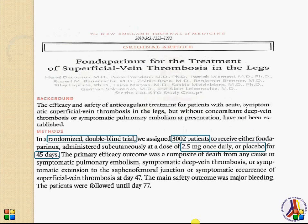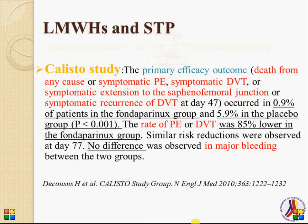The CALISTO study, published in the New England Journal of Medicine in 2010, randomised 3,000 patients. One group received fondaparinux 2.5 mg daily and the other received placebo for 45 days. The primary efficacy outcome — including death from any cause, symptomatic PE, symptomatic DVT, symptomatic extension to the saphenofemoral junction, or symptomatic recurrence at day 47 — occurred in approximately 1% in the fondaparinux group versus 5.9% in the placebo group, a statistically significant difference. The rate of pulmonary embolism and DVT was 85% lower in the fondaparinux group, with similar reductions at day 77 and no difference in major bleeding between groups.